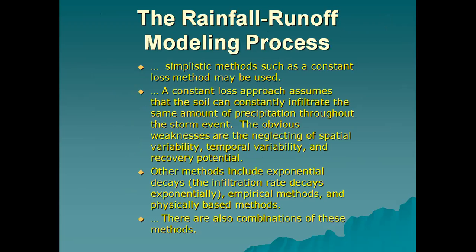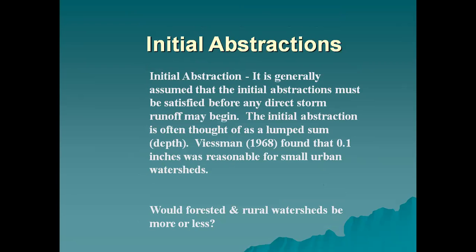The rainfall runoff model process: simplistic methods such as the constant loss method may be used. A constant losses approach assumes that the soil can constantly infiltrate the same amount of precipitation throughout the storm event. The obvious weaknesses are the neglecting of spatial variability, temporal variability, and recovery potential. Other methods include exponential decay, where the infiltration rate decays exponentially, as well as empirical methods and physically based methods. There are also combinations of these methods.